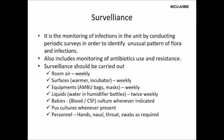Surveillance is the monitoring of infections in the unit by conducting periodic surveys to identify unusual patterns of flora and infections. It also includes monitoring of antibiotic use and resistance. Surveillance should be carried out for: room air weekly; surfaces — warmer, incubator — weekly; equipment such as Ambu bag and mask once a week; liquids such as water in humidifier bottle twice weekly; babies — blood and CSF culture whenever indicated, pus culture whenever present; and personal swabs — hand, nasal, throat — as required.